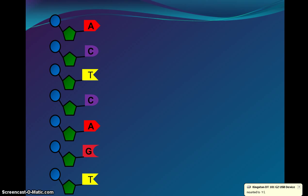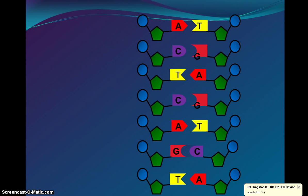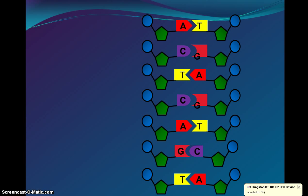Here we have one side of the DNA structure and another side. At the very top on the left there's adenine, and like we said it's always going to pair with thymine — so on the right there's thymine. The second one down we have cytosine on the left and guanine on the right. These are the ones that are going to pair together.